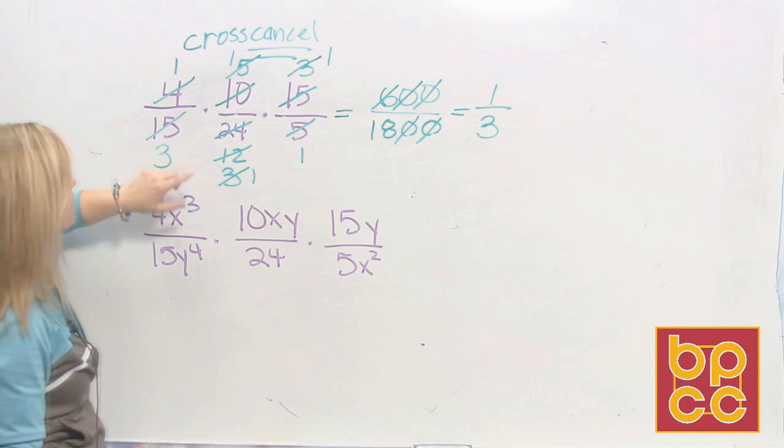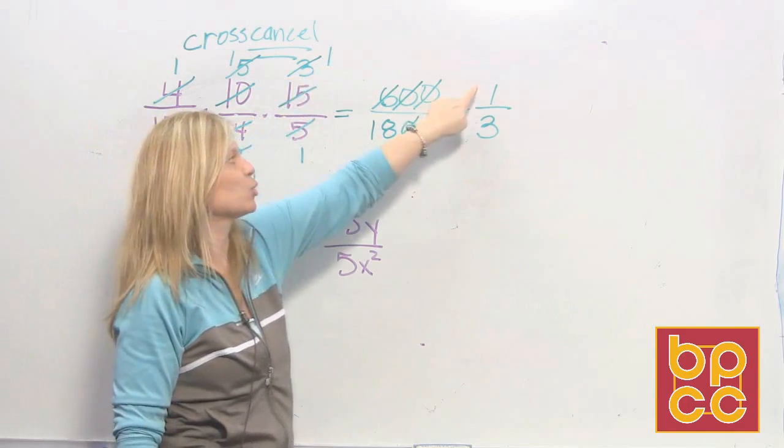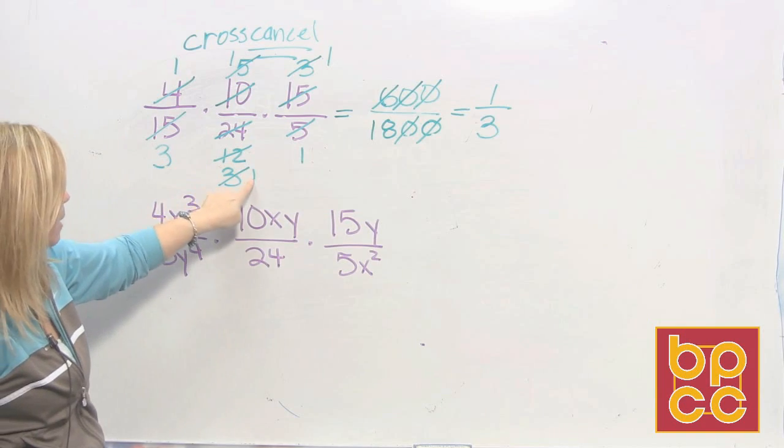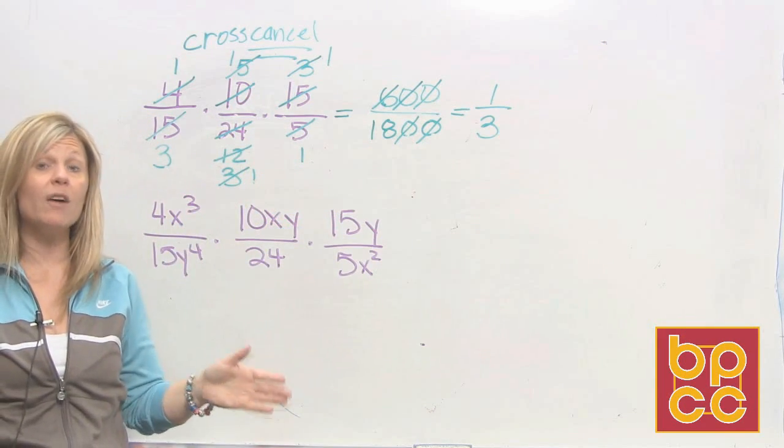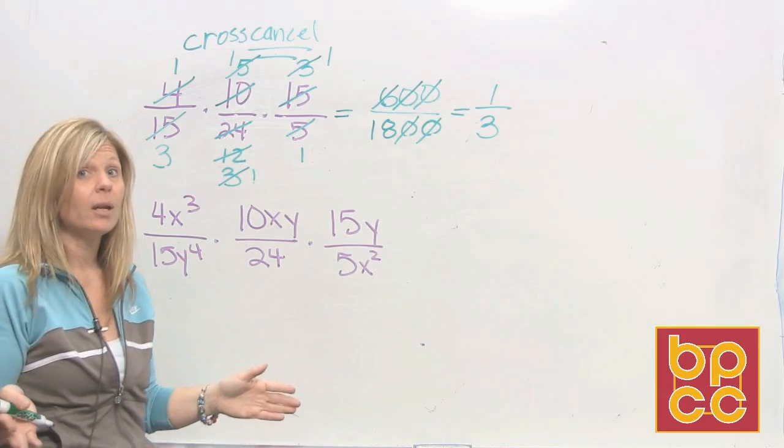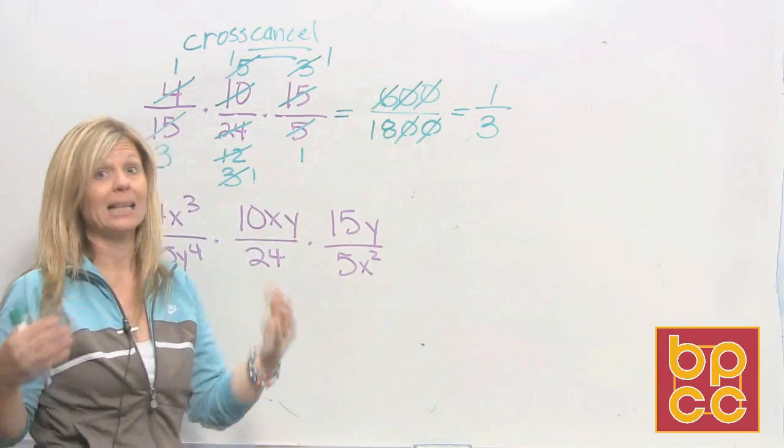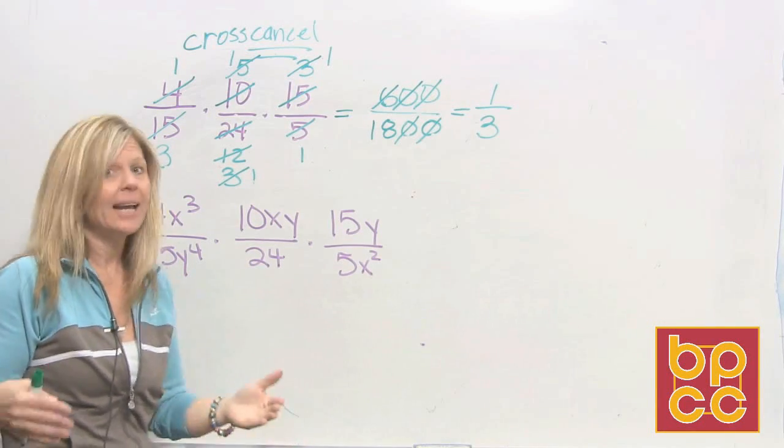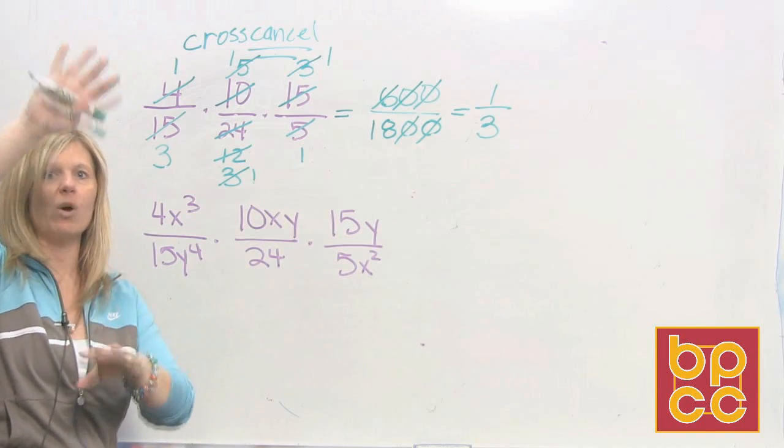If you look now we've done as much dividing and reducing as we can. Now you do the rule top times top. 1 times 1 times 1 is 1. Bottom times bottom. 3 times 1 times 1 is 3. So the moral of today's lesson is going to be before you multiply and make the numbers big, let's reduce. Let's divide first. It doesn't have to go diagonally as long as one's in the numerator and one's in the denominator.